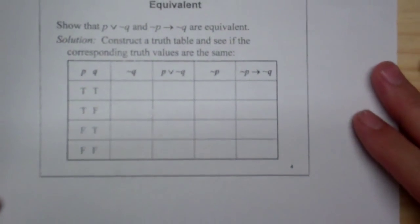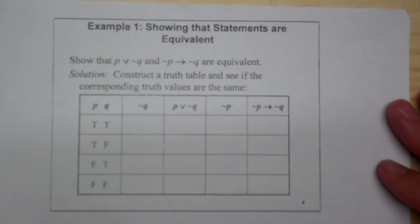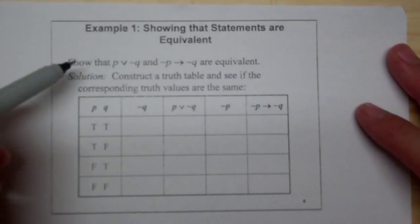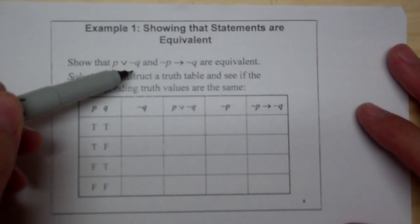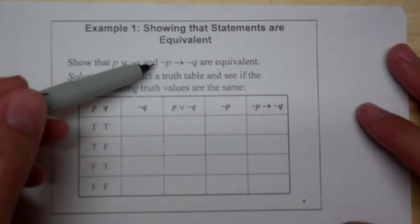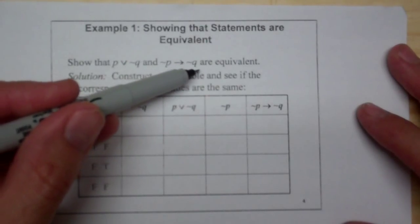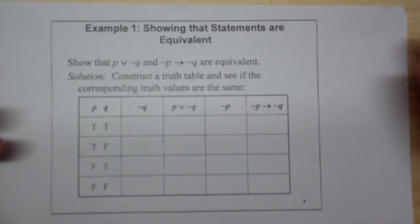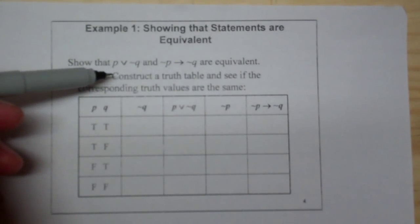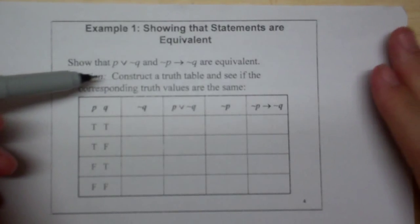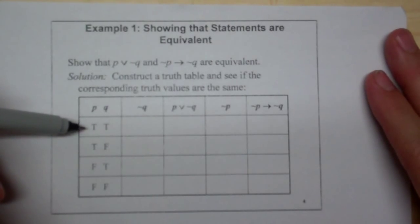Now, how do we show that something is equivalent? We're going to use a truth table. We want to show that P∨¬Q and ¬P→¬Q are equivalent. So I'm going to construct a truth table and look at the corresponding truth values.